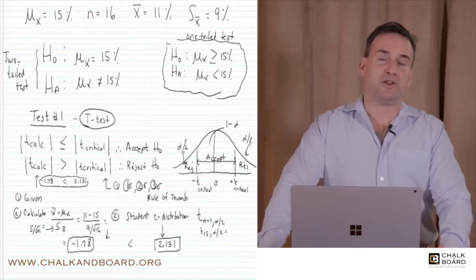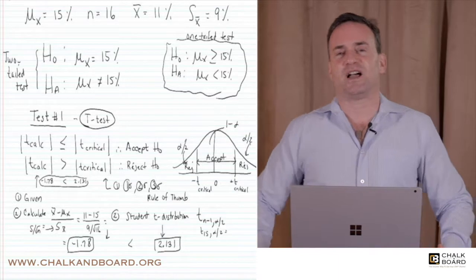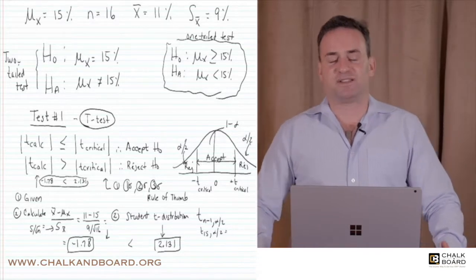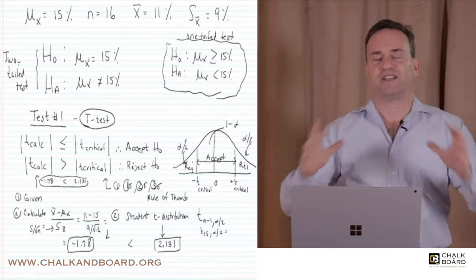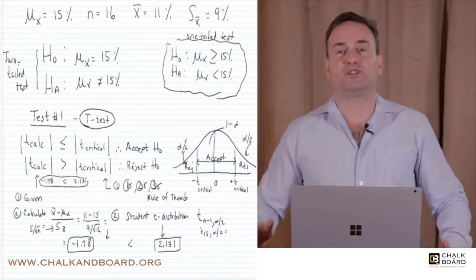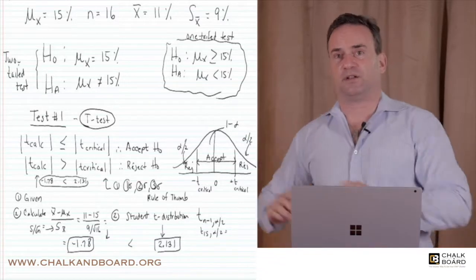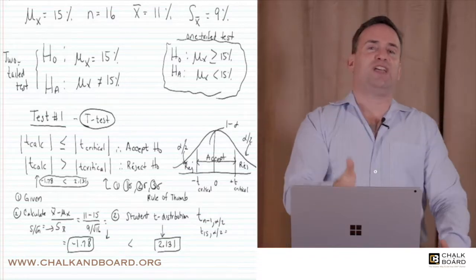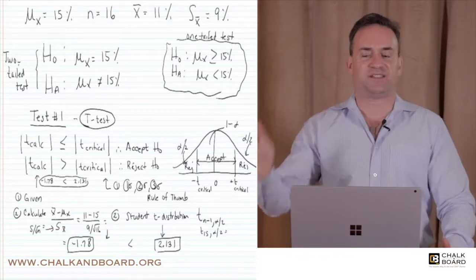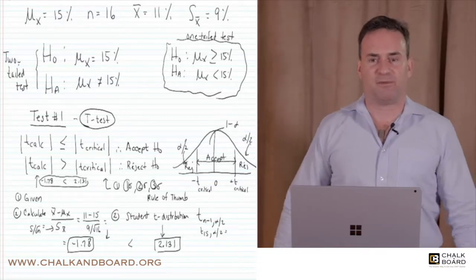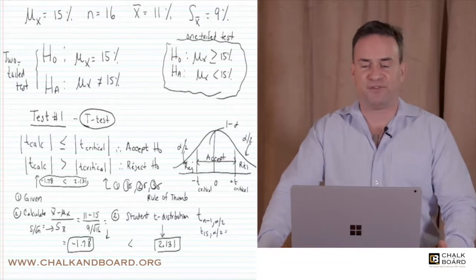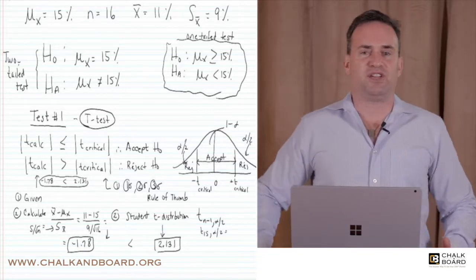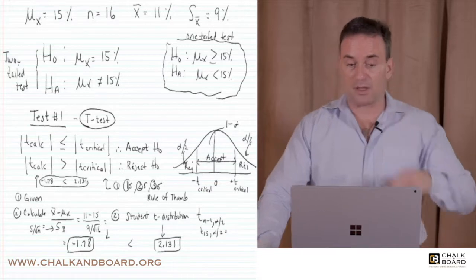My manager and I decide to pick 16 stocks at random — N equals 16, as you can see on the screen. From this sample of 16 stocks, we calculate the mean return. We didn't get 15% like the company claimed — we actually only got 11%. The standard deviation for this one sample of 16 stocks was 9%. So the population mean is 15%, N is 16, our sample mean X-bar was 11%, and the standard deviation of our sample was 9%.